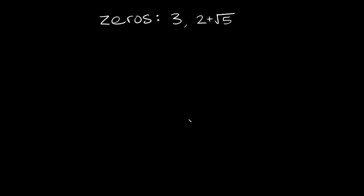What's up you freaking geniuses? In this video I'm going to teach you how to write the equation of a polynomial given the zeros, where one of your zeros is an irrational conjugate. An irrational conjugate is basically just in the form a plus or minus the square root of b — so some number plus or minus the square root of another number.